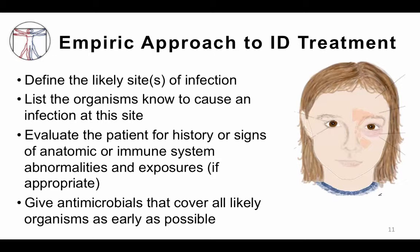When thinking about the empiric approach to infectious disease treatment, we want to define the likely site of infection. In Irena's case, we consider whether the infection is limited to the periorbital space or also involves the sinuses or cavernous sinuses. We list the organisms known to cause infections at those sites, evaluate the patient's history for anatomic or immune system abnormalities and exposures, and then give antimicrobials that cover all likely organisms as early as possible.